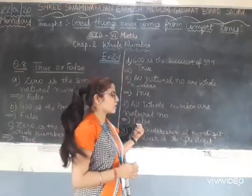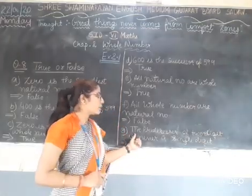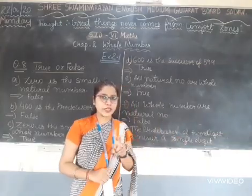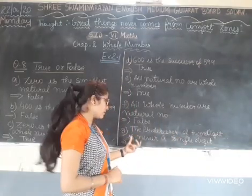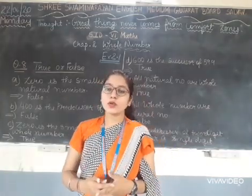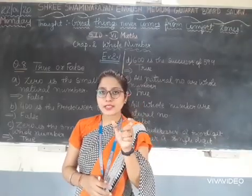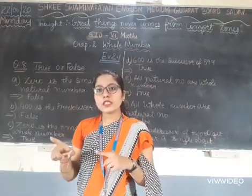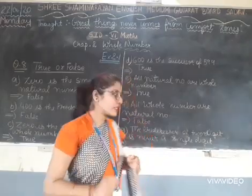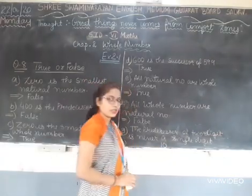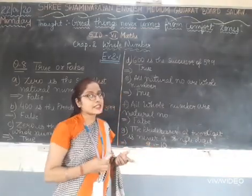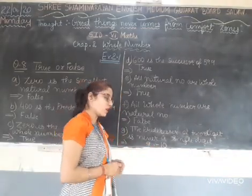That's why natural numbers do not include 0. The predecessor means previous number. The predecessor of a 2-digit number — the question asks whether the previous number of any 2-digit number is never a single digit. This statement is wrong. For example, suppose 10. What is the predecessor of 10? It is 9. And 9 is a single digit. So this statement is false.